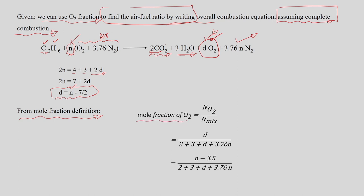The mole fraction of oxygen equals the number of moles of O2 in the product gas divided by the total moles of gas in the product. The numerator is D, and the denominator consists of 2 moles of CO2, 3 moles of H2O, D moles of O2, and 3.76N moles of nitrogen — representing the total moles in the product mixture.